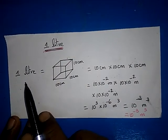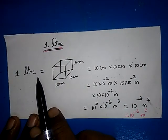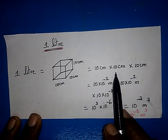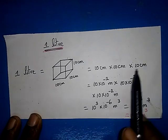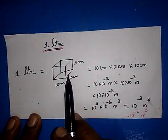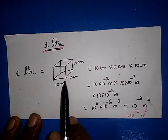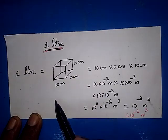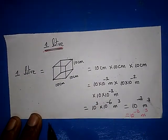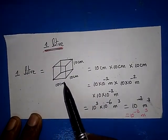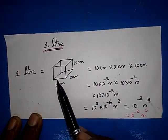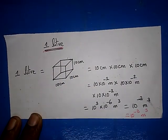1 litre is equal to 10 centimetre into 10 centimetre into 10 centimetre. That is, this is the volume. The length is 10 centimetre, breadth is 10 centimetre and height is 10 centimetre. So the volume occupied by this is 1 litre.